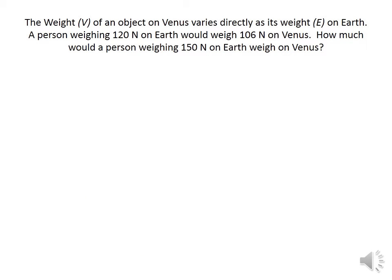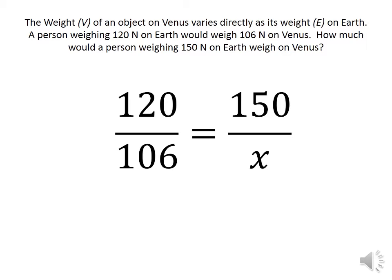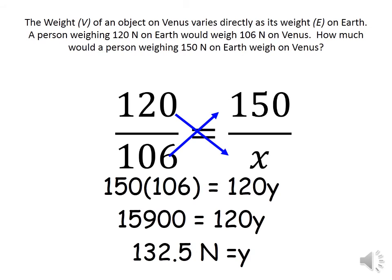The weight of an object on Venus varies directly with the weight on Earth. A person weighing 120 N on Earth would weigh 160 N on Venus. How much would a person weighing 150 N on Earth weigh on Venus? We have the relation y1 over x1 equals y2 over x2. So 120 over 160 equals 150 over x. Cross multiplication gives 120 times x equals 150 times 160, so x equals 200 N.